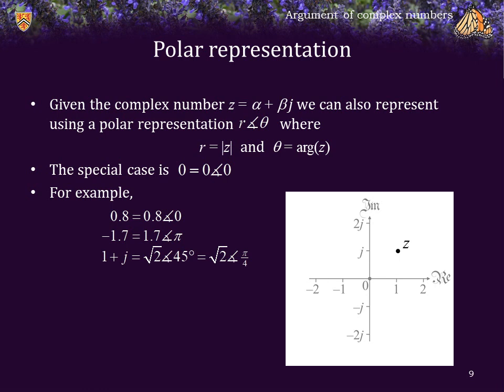1 + j is equal to √2∠45°, or equivalently, √2∠π/4 radians.